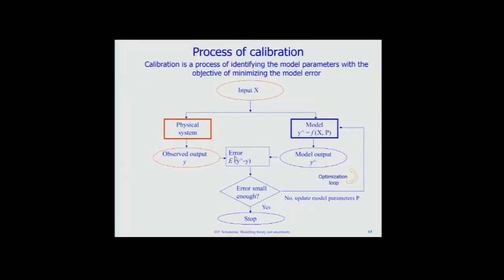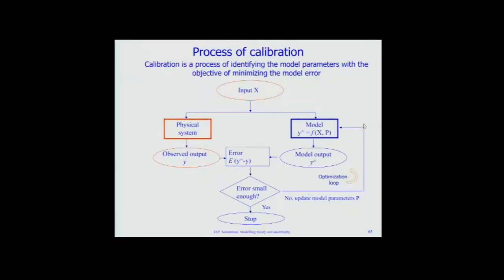Model output is denoted ŷ (written here as y-caret) and observed output is y. We calculate the error, and if the error is small enough we stop calibration; if not, we change the parameter vector θ (or p) and run the model again. If still not good, we change parameters again and run again — continuing until the model becomes good. This is manual calibration.